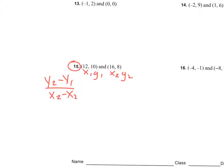8 minus 10, right. So you're going to go 8 minus 10 over — what's x2 minus x1? x2 minus 12. So if we simplify that, you get negative 2 over 4. What's negative 2 over 4? Reduce — negative one half. What did we just find? That's your slope. That's m.